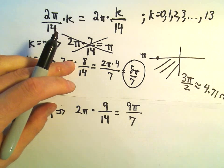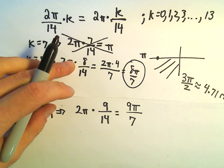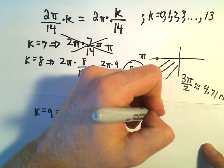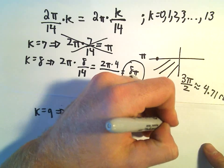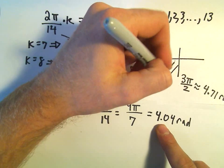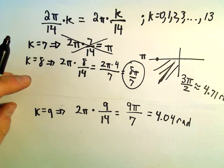Well, have we gotten too big yet? I don't know. Let's check. So we'll do 9 times 3.14, divide that by 7. Well, this is going to be 4.04 radians roughly. So yeah, that angle would still be falling also in quadrant 3.